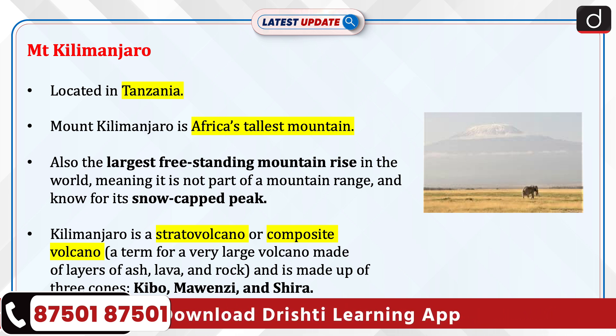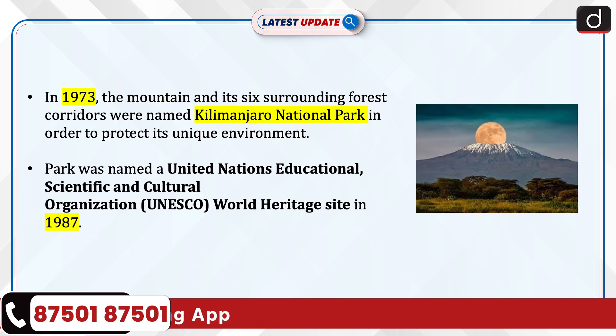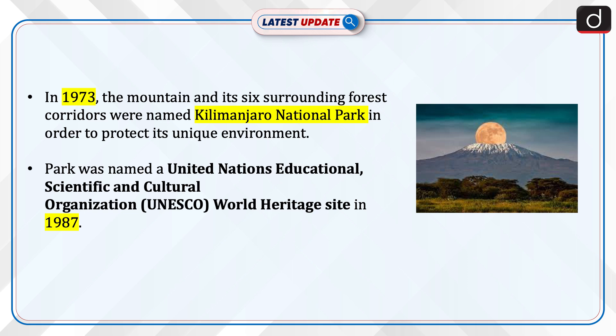Kilimanjaro is made of lava and rock, and is made up of three cones: Kibo, Mawenzie, and Shira. In 1973, the mountain and its six surrounding forest corridors were named Kilimanjaro National Park to protect its unique environment. The park was named a UNESCO World Heritage Site in 1987.